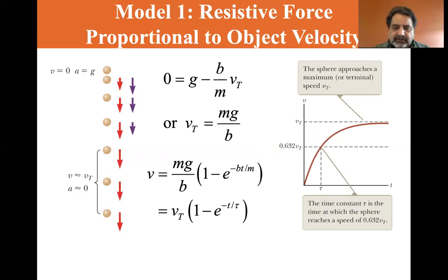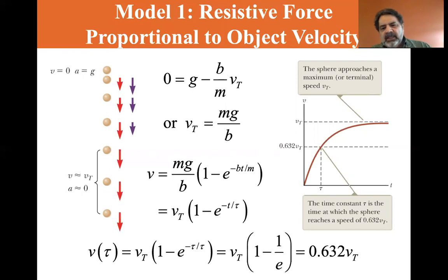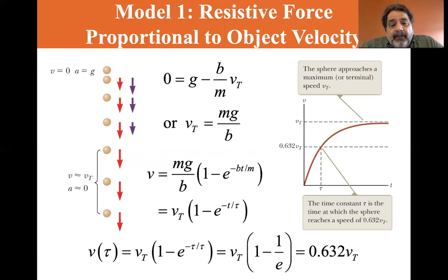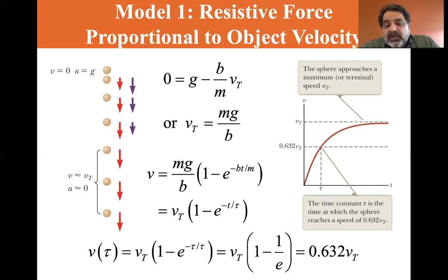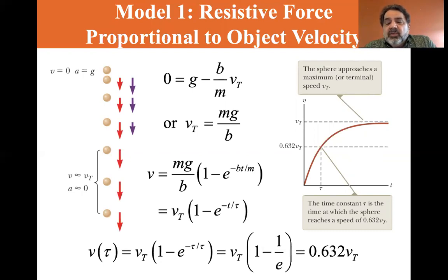At time t equals tau, v equals v_t times (1 minus e^(−1)), which equals v_t times (1 minus 1/e), which equals 0.632 times v_t. So at tau, the speed is 63.2% of the terminal velocity.